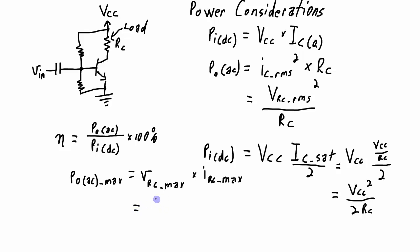VCC is the peak to peak maximum, divided by 2 to give me the peak maximum, divided by the square root of 2 to give me the RMS. Same thing over here for the RC.